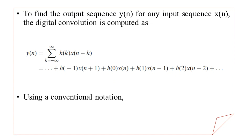There is a simpler way of representing the convolution operation in the signal processing domain: it is represented by placing an asterisk between the impulse response H of N and the input discrete time sequence X of N. So Y of N can be obtained by convolving X of N with H of N. This is the conventional notation used everywhere for the convolution operation.